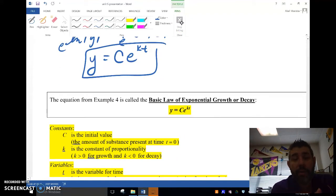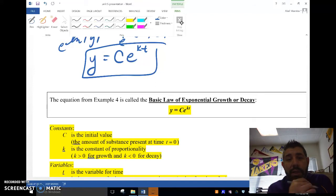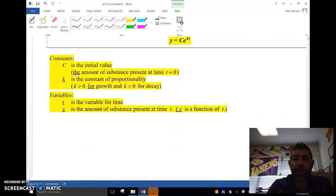C is going to be the initial value of our population or whatever. If it's a population growth problem, C is the initial value. Y is the value at time t, so t is a variable of time. And k is called our constant of proportionality, sometimes called the growth rate or the decay rate.